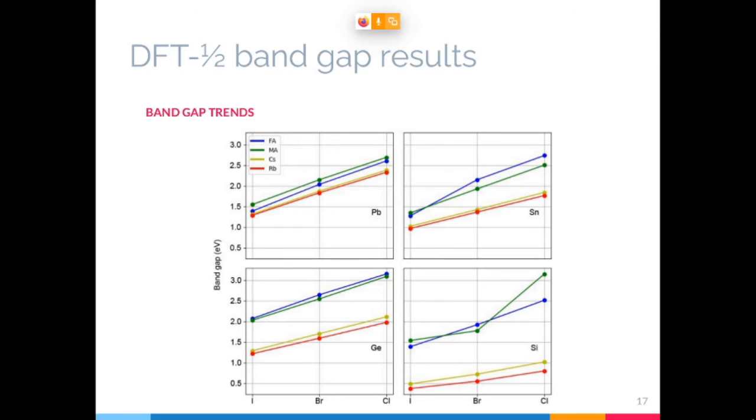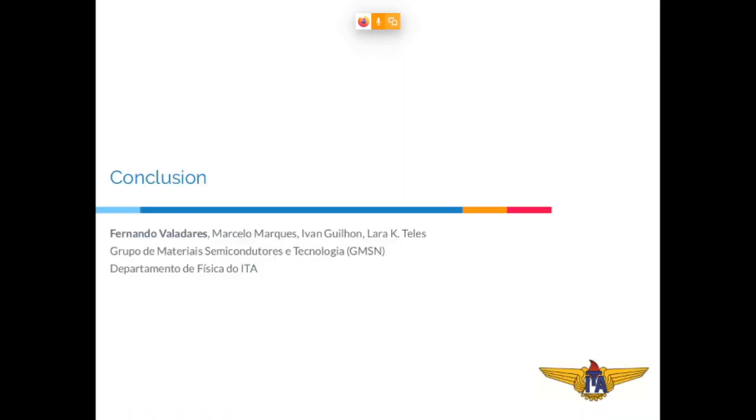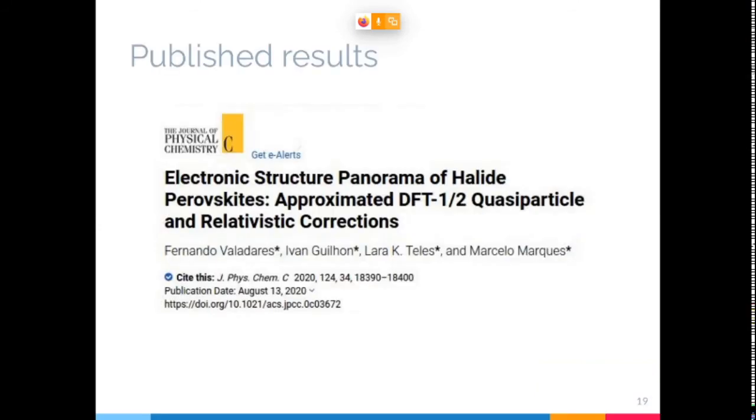So in conclusion, I could establish this relation between the chemical composition, the structure, and the band gap, so we can better know how to manipulate these properties. I showed that the DFT minus half method devised by our group is very efficient for initial calculations of band gaps. And also we found 16 different materials that can be possible materials for composing the absorbent layers of solar cells. Finally, I would like to invite you to check our publication where we recently reported these results, where we explore in much more detail all these relations and many more other things that we found in this interesting class of materials. Thank you.